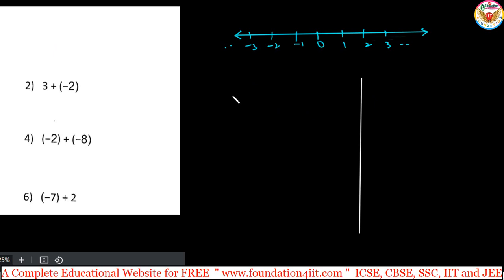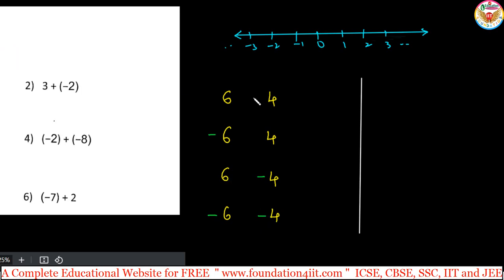Let me take the numbers 6 and 4, and I will show you 4 ways: plus 6 plus 4, minus 6 plus 4, plus 6 minus 4, and minus 6 minus 4. When you have two signs side by side, maintain a bracket. So the pattern is: plus 6 plus 4, minus 6 plus 4, plus 6 minus 4, and minus 6 minus 4 — covering both positive, both negative, and mixed positive-negative combinations.